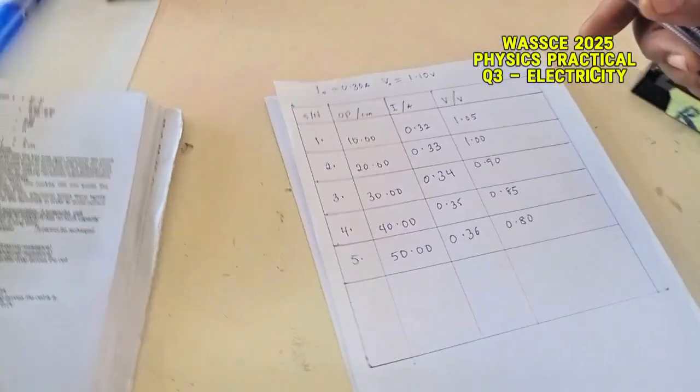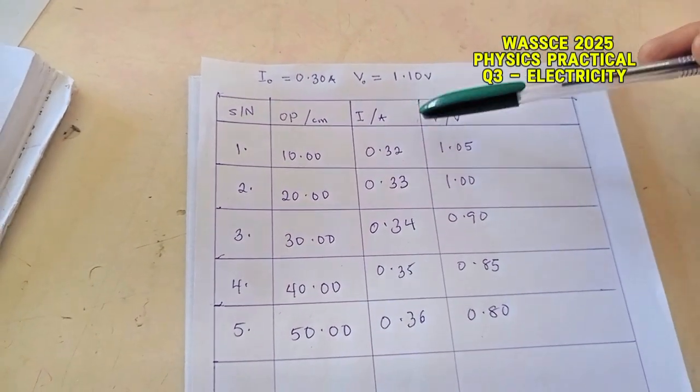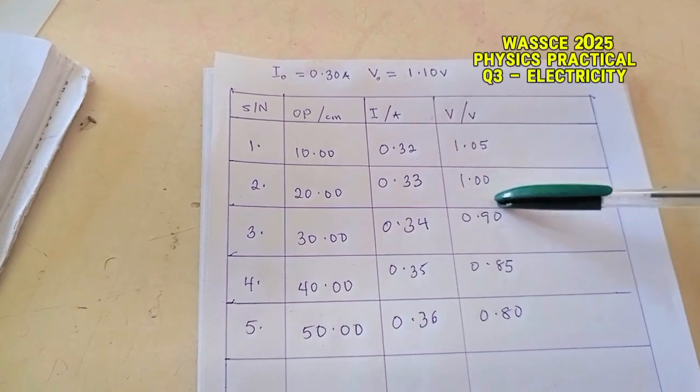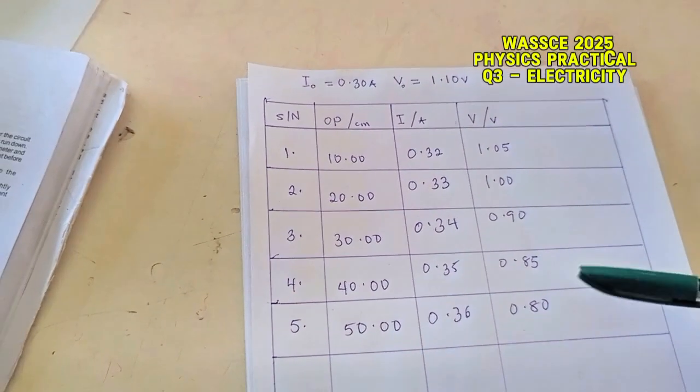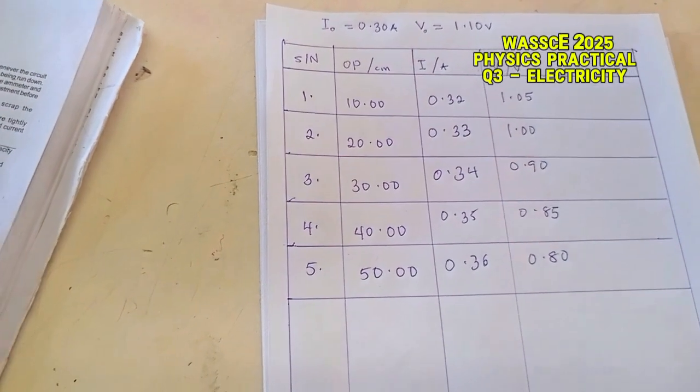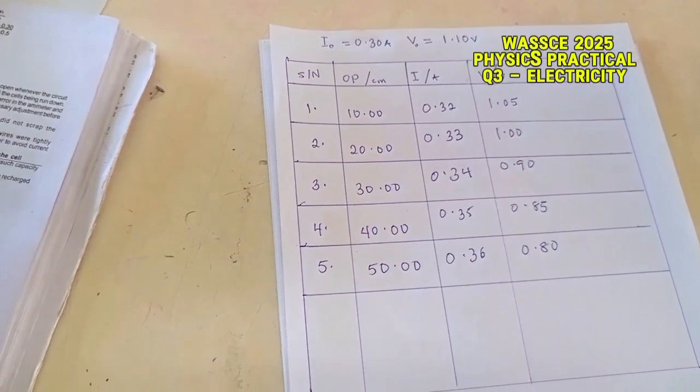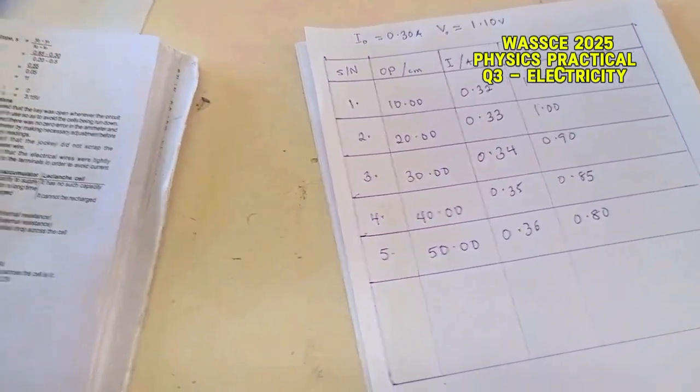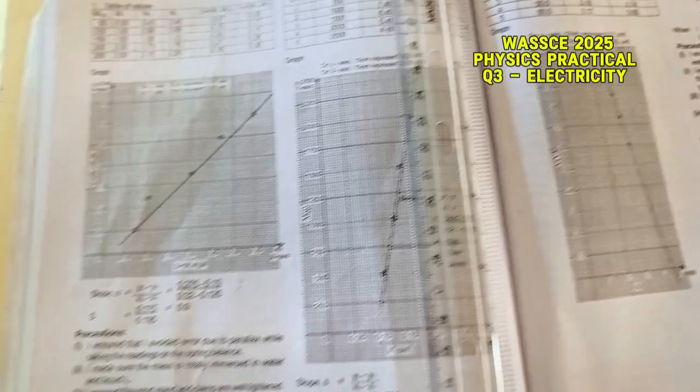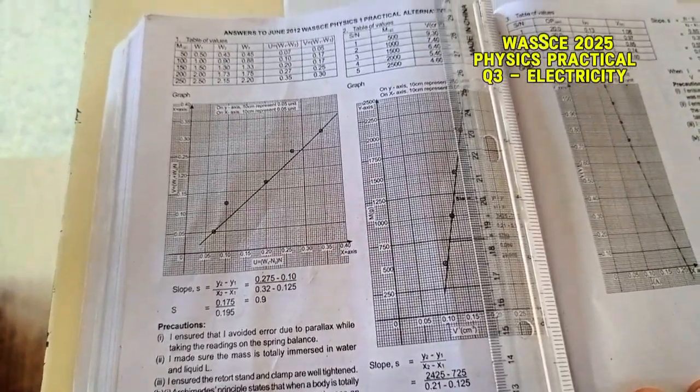So as you can see from my table here, there's a trend. As this one is increasing down, this one is decreasing down. So I have my trend, though this one is likely odd but it's okay. Now we already have a good value, so I'm just going to keep it that way. So we plot the graph of V on the vertical axis and the graph of I on the horizontal axis, giving us a negative slope graph.